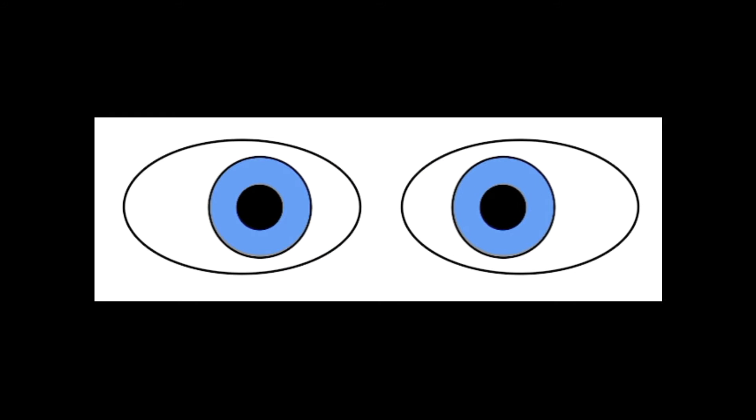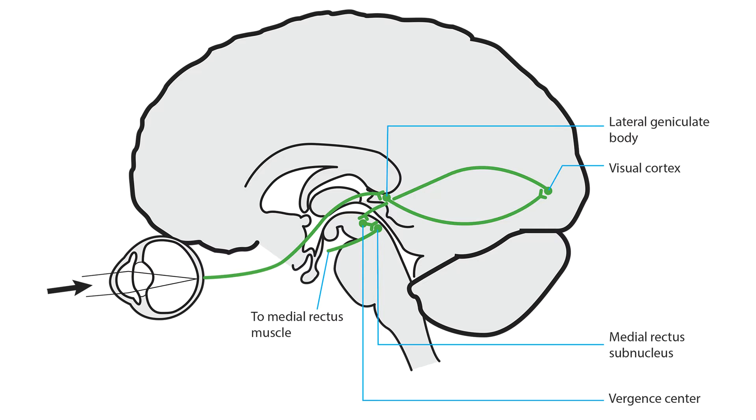The vergence pathway keeps the eyes on the target as it moves toward or away from you. To make that happen, a signal must be sent from the eyes to the primary visual cortex and then down to the midbrain from both cerebral hemispheres.